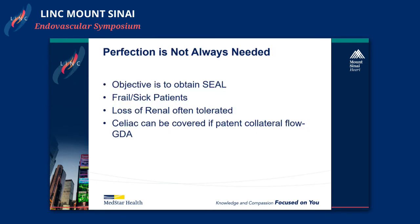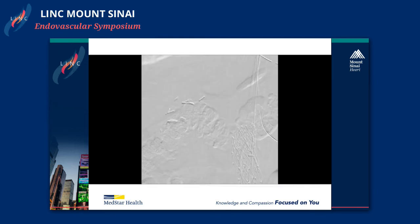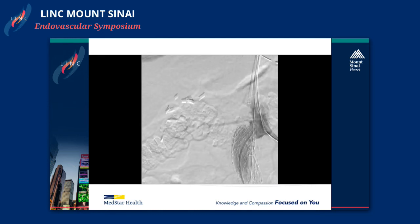Another thing to recognize is that perfection is not always needed. We as surgeons are perfectionists at baseline and always want to do what is optimal, but remember: the enemy of good is better. Sometimes you just want to go for the seal. These patients often can be frail and sick. Loss of a renal can often be tolerated. The celiac can be covered in most situations as long as there's a patent GDA that provides collateral flow. Here's a patient with a prior device and very tortuous aorta. The right renal comes off at a bad angle and there's a stent in it already. In this situation, you try for a little bit — if you can't get it, you move on. The left kidney is better, and you'll be fine not having the patient on the table for extra several hours trying to get that right renal.